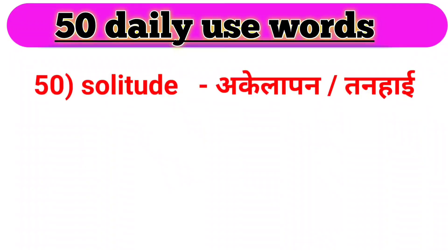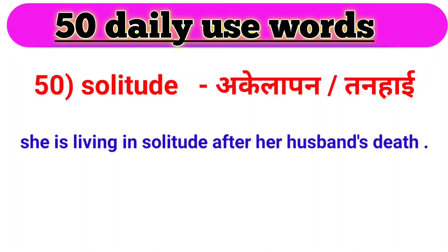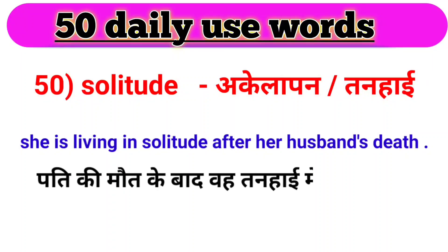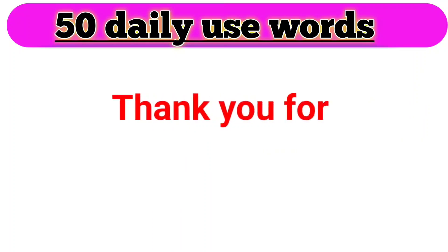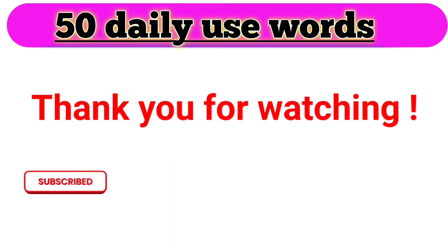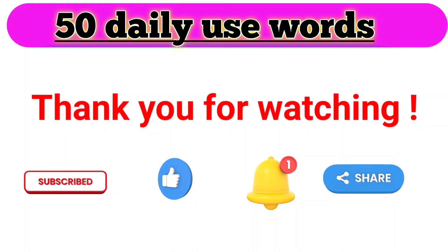Aaj ka hamaara aakhri word hai — solitude. Solitude ka matlab hota hai akela pan ya tanhaai. For example: She is living in solitude after her husband's death. Pati ki maut ke baad woh tanhaai mein ji rahi hai. And this is our end of the video. Please like this video and subscribe to the channel. Thank you very much for watching.